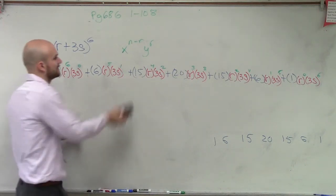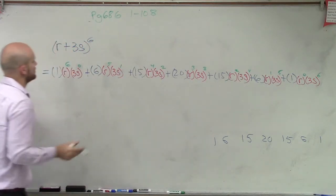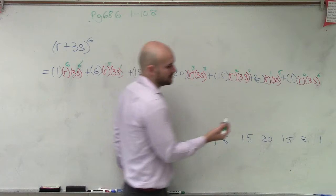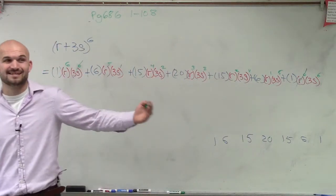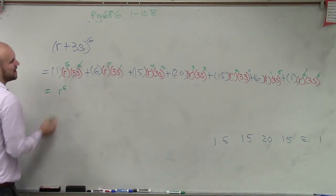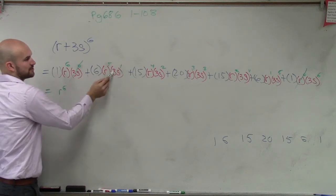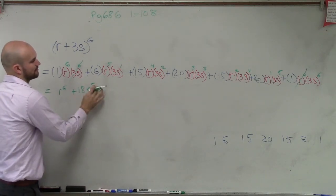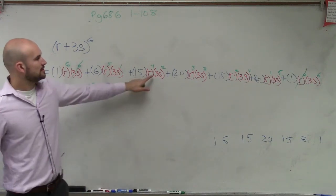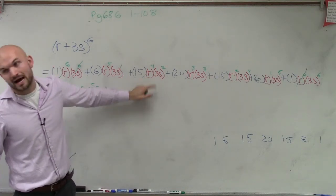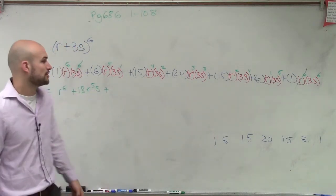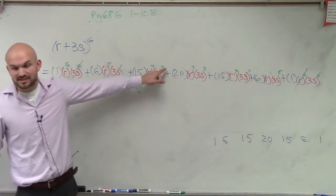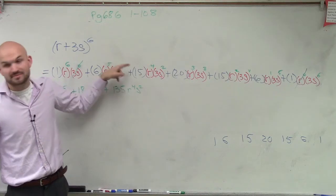So now we need to simplify. Anything to the 0 power equals 1, so we can eliminate that factor. So r to the 6th power is just r to the 6th. Here we have 3s to the 1st power, so 3 times 6 is 18 — giving us positive 18r^5s. Then 3s squared: 3 squared is 9, and 9 times 15 is 135, so we have 135r^4s^2. Make sure you square the 3 — 3s squared is 9s squared, and 9 times 15 is 135.